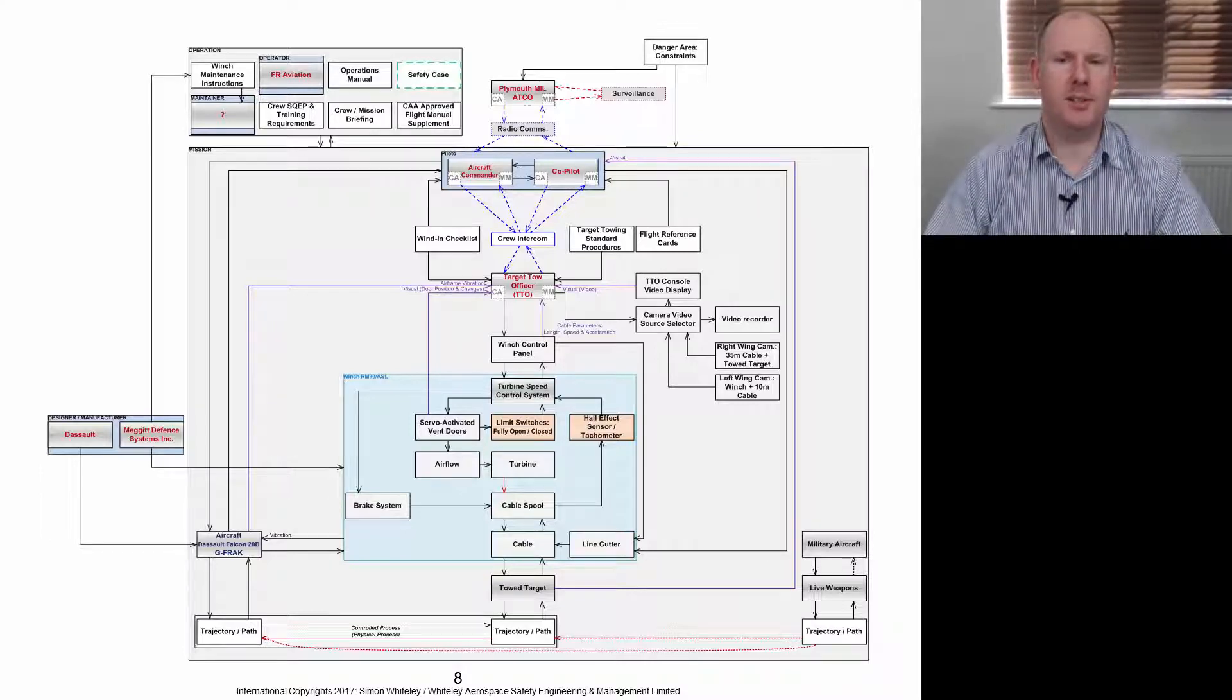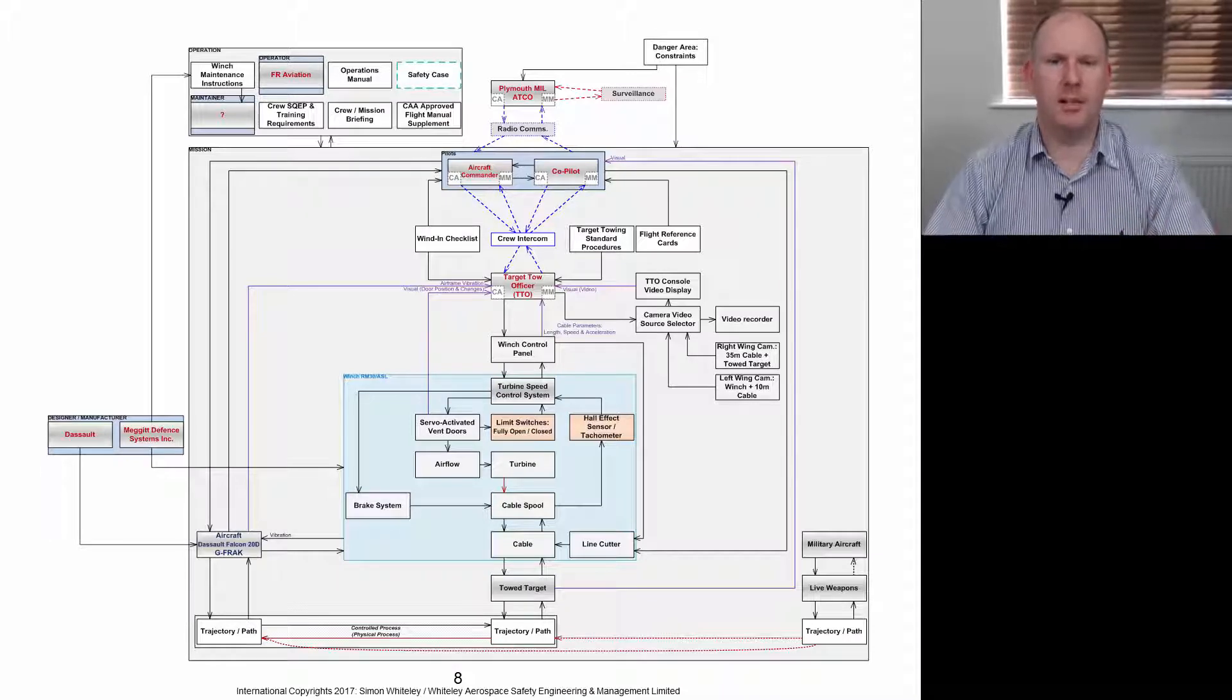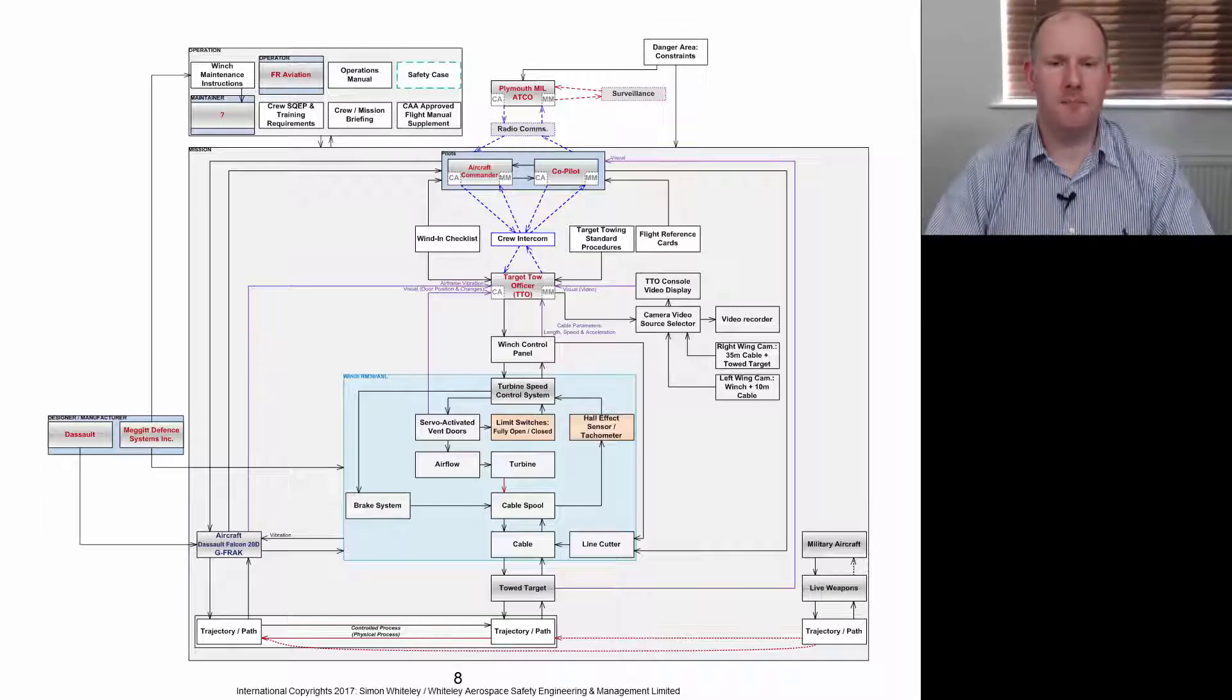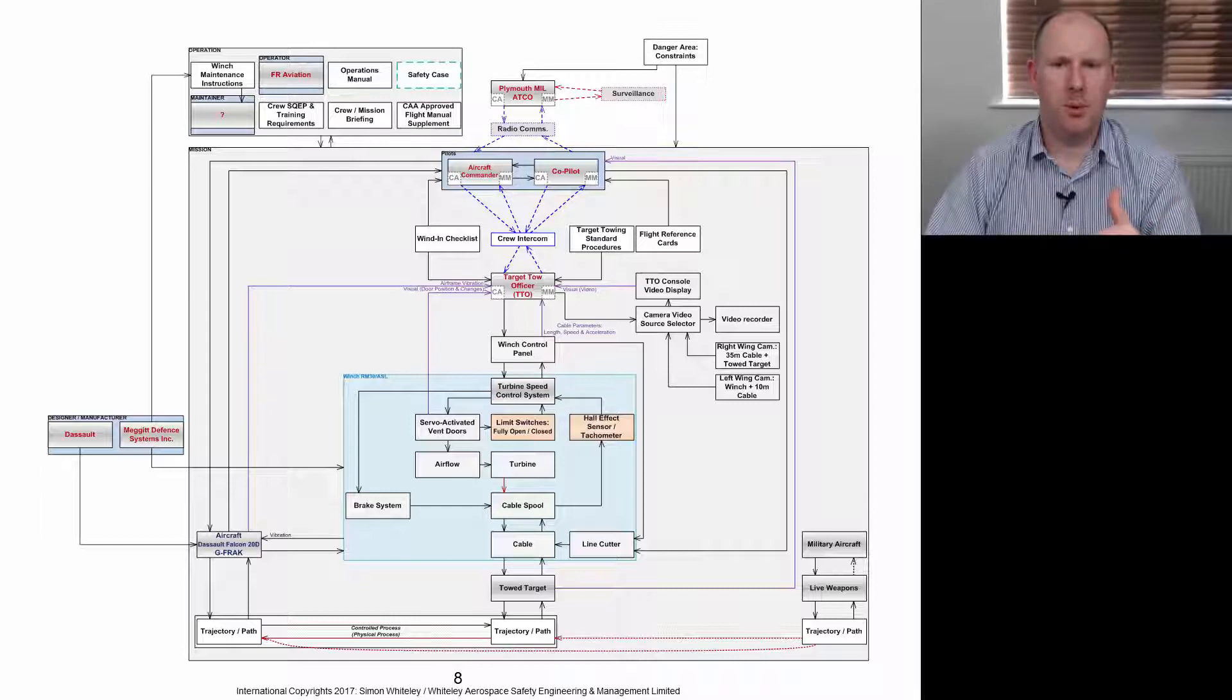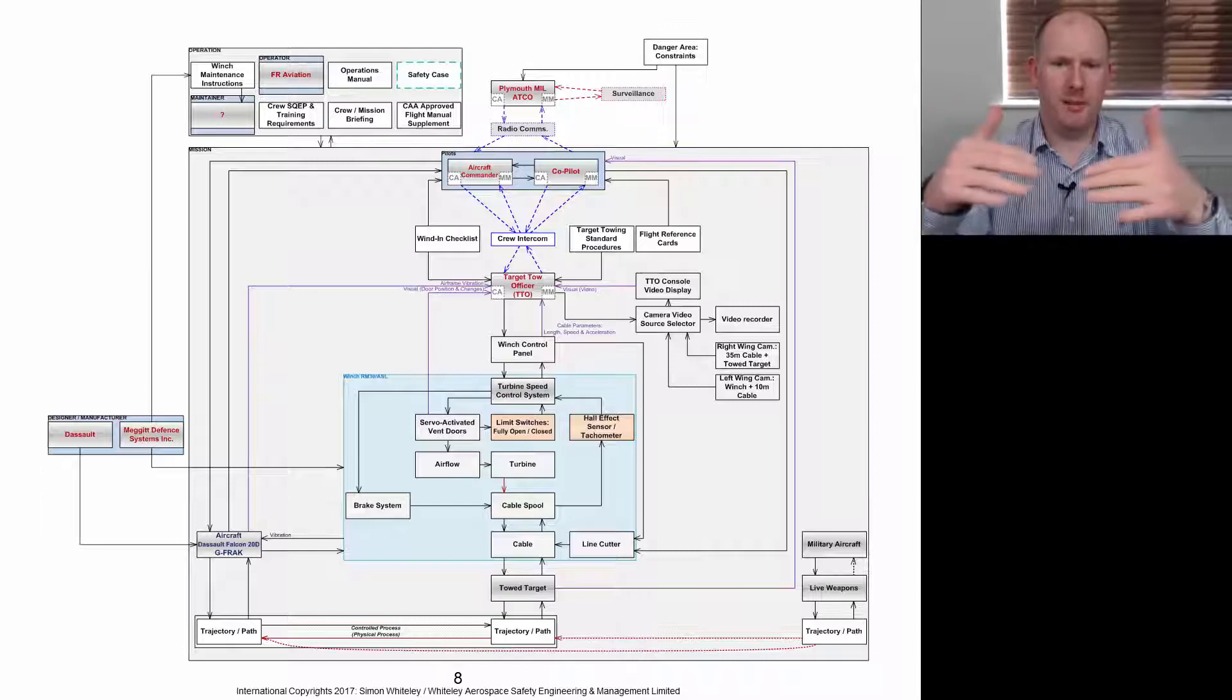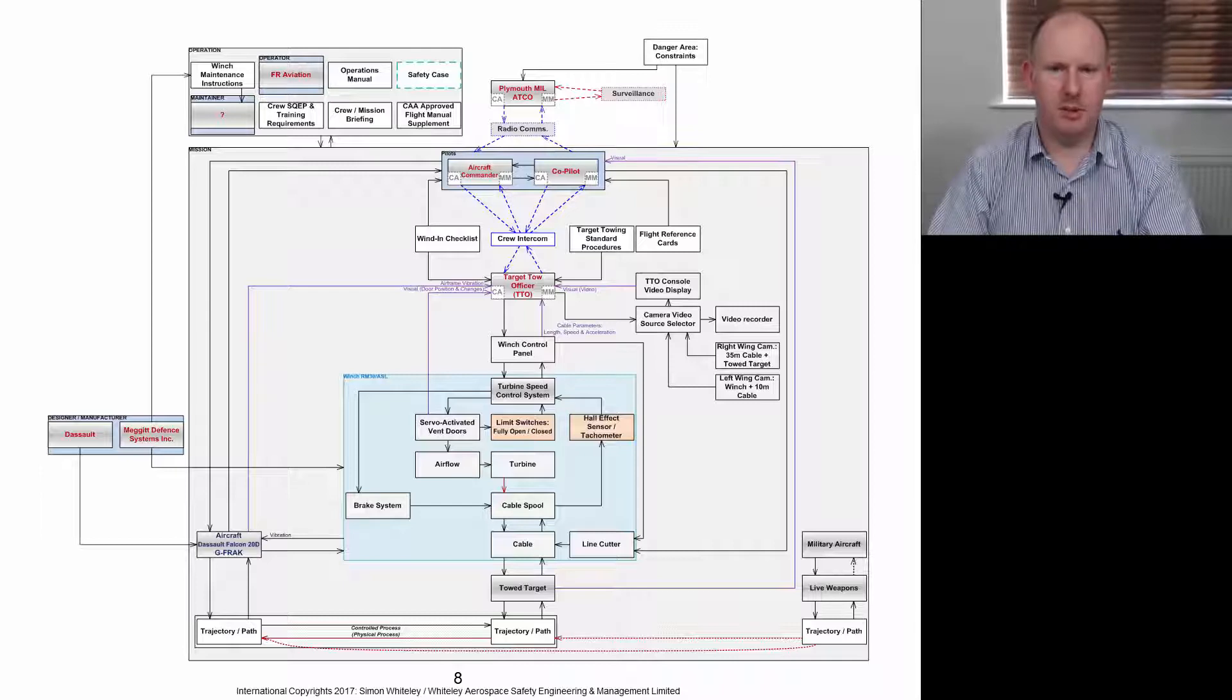The aircrew and the target tow officer communicate through the crew intercom, and they've got certain procedures and checklists that they use not only to operate the aircraft to complete the mission but also to operate the winch itself. You'll notice that the target tow officer is sort of key to this control structure. Obviously, the winch itself has a turbine speed control system, but the position that this target tow officer has in the hierarchy of the structure—you'll notice there's a lot of feedback going to that tow officer. That tow officer has to keep an eye on a lot of different things and make decisions which are time-critical as well as safety-related.